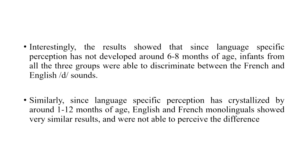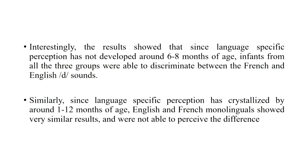The results showed that since language-specific perception has not really developed by around six to eight months of age, infants from all three groups — French monolinguals, English monolinguals, and French-English bilinguals — were capable of making the distinction between the French and English 'the' sounds. Interestingly, since language-specific perception has started to crystallize by around ten to twelve months of age, English and French monolinguals showed very similar patterns and were not able to perceive the difference.